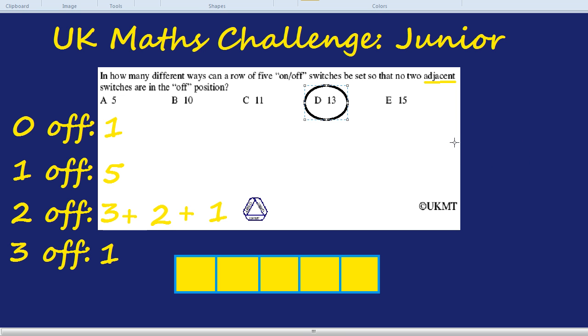What I would recommend you do now we've done that question is actually to explore all the different patterns and the different numbers you get. For example, if there were four off switches, or if there were ten switches in total, how many can you do without there being two adjacent off switches? Or eight switches in total, seven switches in total? And see if you can spot any patterns. Because as always in maths, there are hundreds of hidden patterns.